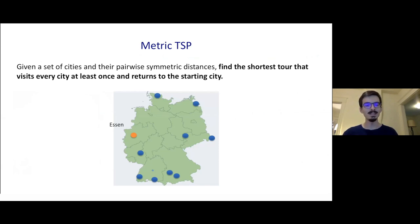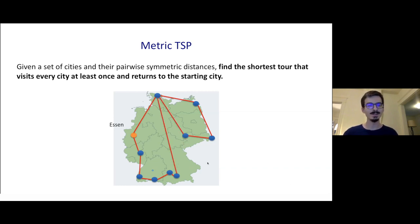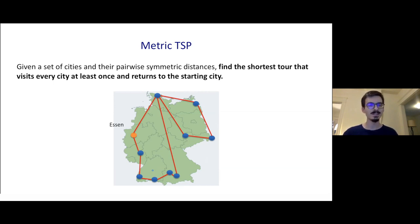Say I give you a set of cities and their pairwise distances, which we assume are symmetric, so they're the same in both directions. TSP asks you to find the shortest tour which visits every city at least once and then returns to the starting city. Any connected graph where every vertex has even degree is valid, since such a graph has a so-called Eulerian tour. So basically, we're looking for a minimum cost graph which is connected and in which every vertex has even degree.